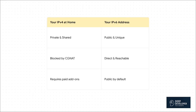Let's break this down, because this is really the aha moment. Your home IPv4 address? That's private. It's shared. It's blocked by CGNAT. It's like an internal office extension — you can't dial it from the outside world. But your IPv6 address? That is public. It's unique to your device, and it's reachable from anywhere on the internet right out of the box. No sharing. No roadblocks. Just a direct line.